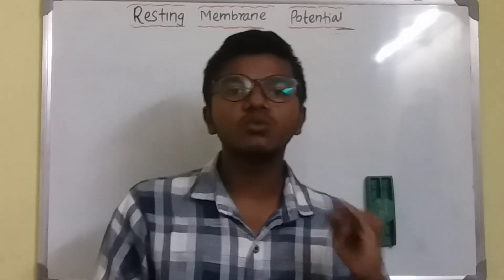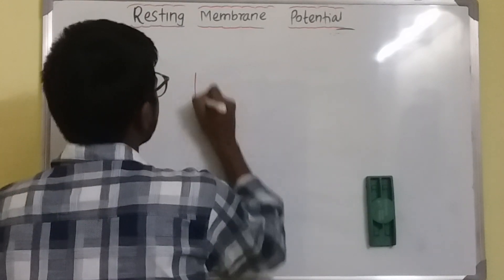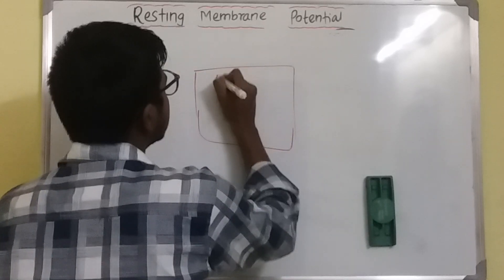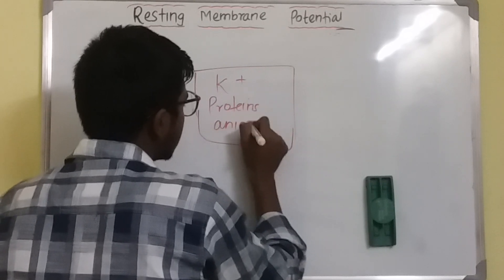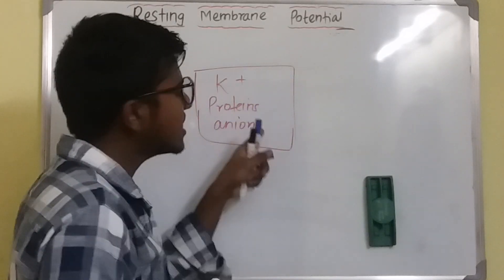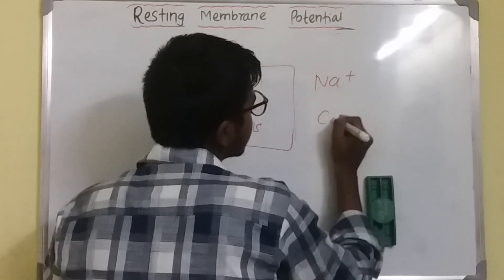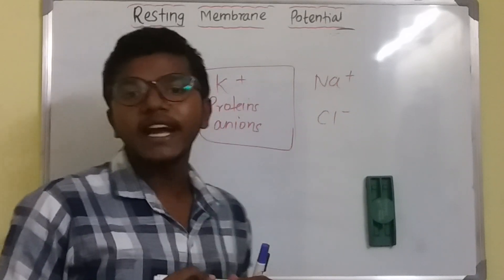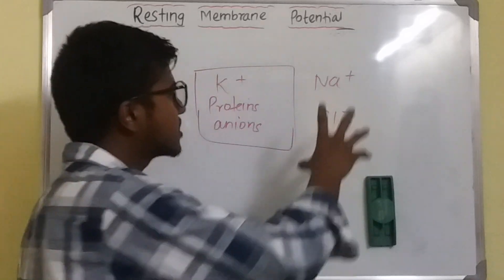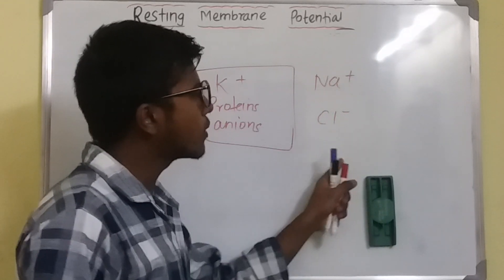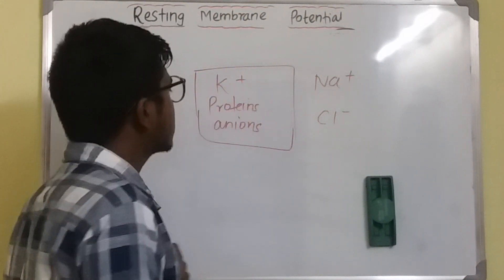The intracellular fluid contains potassium, anions, and proteins. Inside the cell there is potassium, proteins, and anions — and proteins and anions are negatively charged. Whereas outside the cell, there is presence of sodium and chloride in abundance. So sodium is more concentrated in the extracellular fluid, followed by chloride, whereas inside the cell there is more concentration of potassium, proteins, and anions.